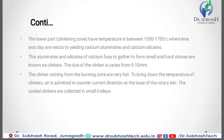The lower part — the clinkering zone — has a temperature of between 1500 to 1700 degrees Celsius, where lime and clay react to yield calcium aluminates and calcium silicate. These aluminates and silicates of calcium fuse together to form small, hard stones known as clinker. Clinker size varies from 5 to 10 mm. The clinker coming from the burning zone is very hot, so to bring down its temperature, air is admitted in counter-current direction at the base of the rotary kiln, and the cooled clinker is collected in small trolleys.